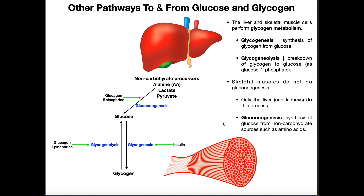We're going to be differentiating a few pathways here that have really similar sounding names or are often confused, and hopefully understand the difference between them. Those are glycogenesis, glycogenolysis, and gluconeogenesis.